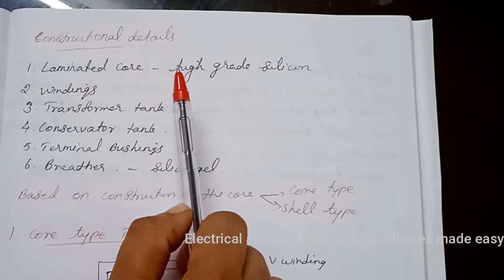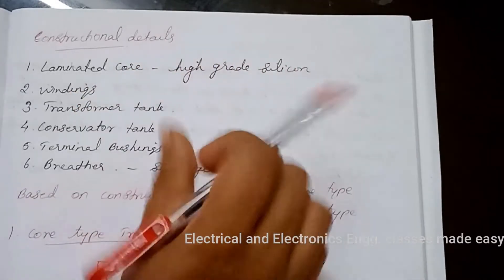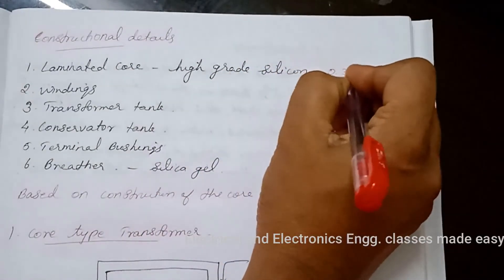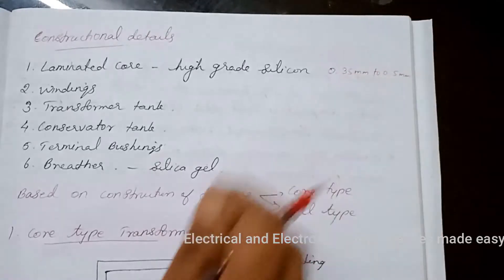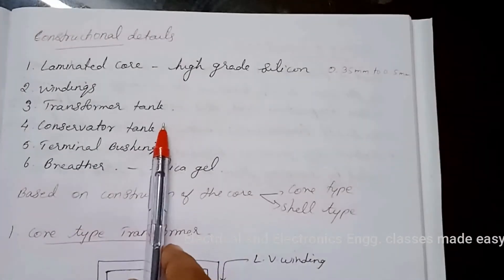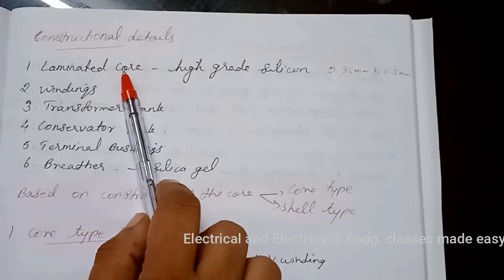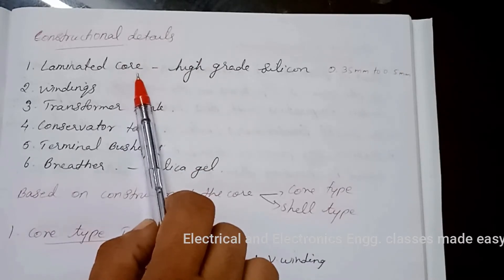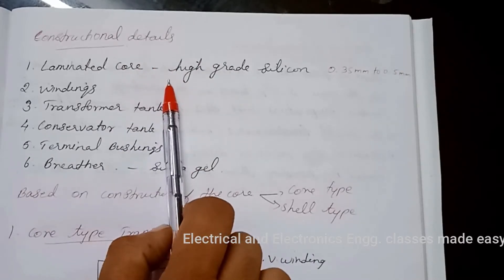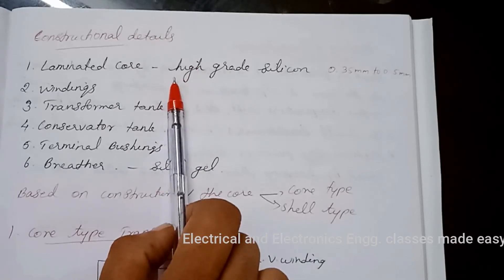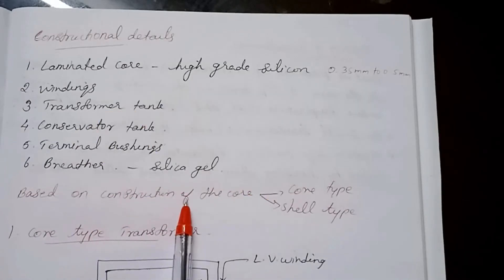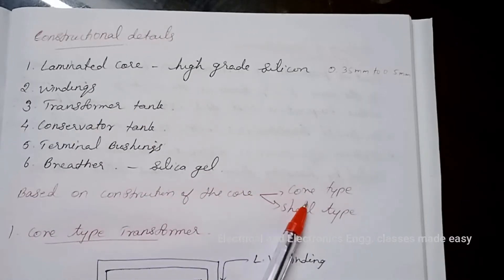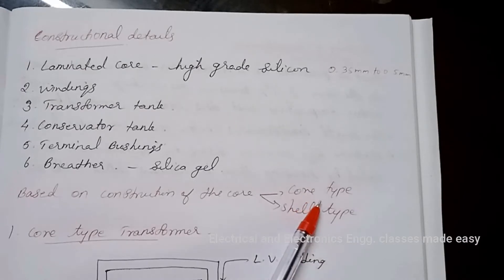The thickness of laminations varies from 0.35 mm to 0.5 mm. The core is laminated to reduce the power loss due to eddy currents which appear in the form of heat. Based on the construction of the core, there are two types of transformers, that is core-type transformer and shell-type transformer.